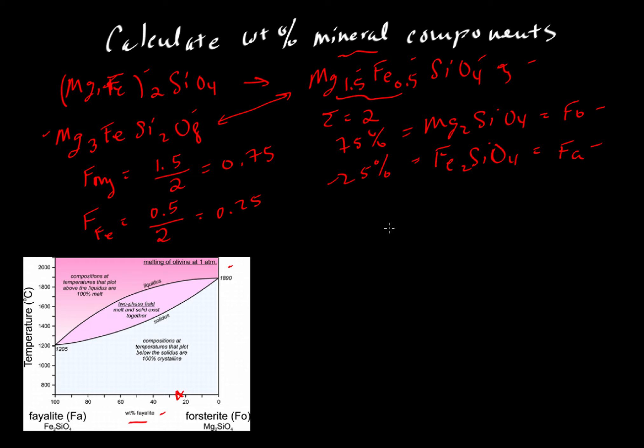How would we do that? We would take the molecular weights of forsterite and fayalite. For forsterite, the molecular weight is about 140.7 grams per mole. And for fayalite, the molecular weight is about 203.8 grams per mole.